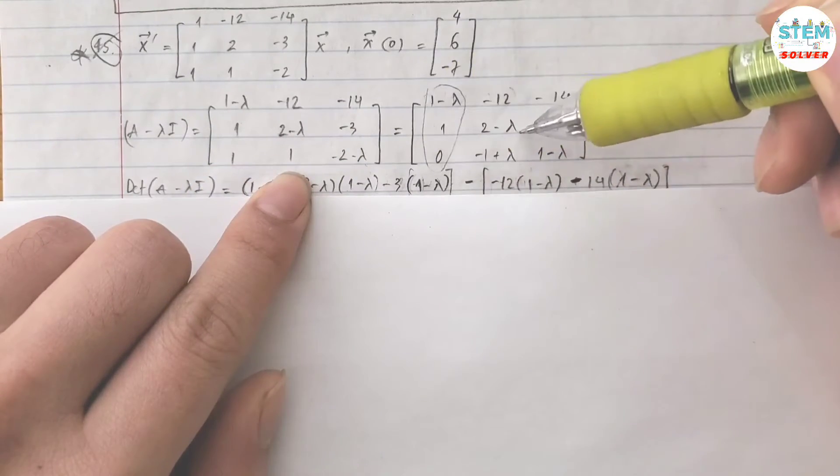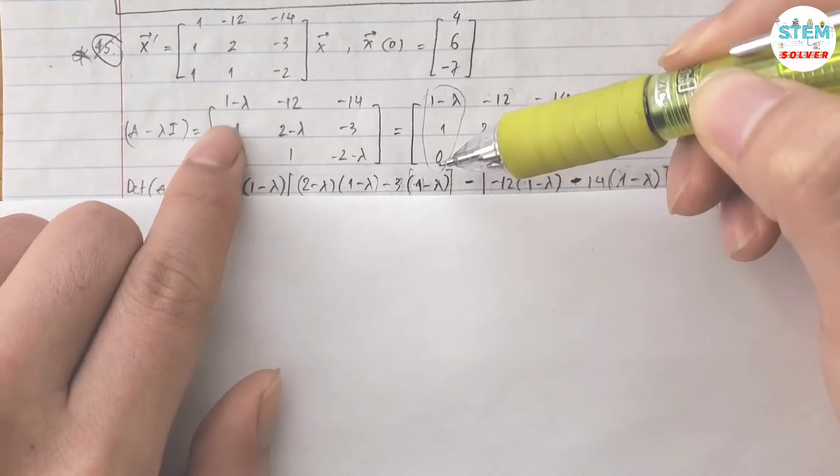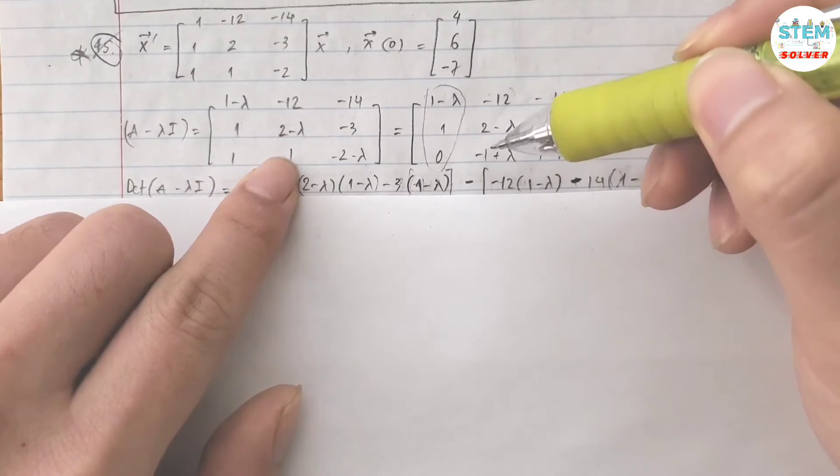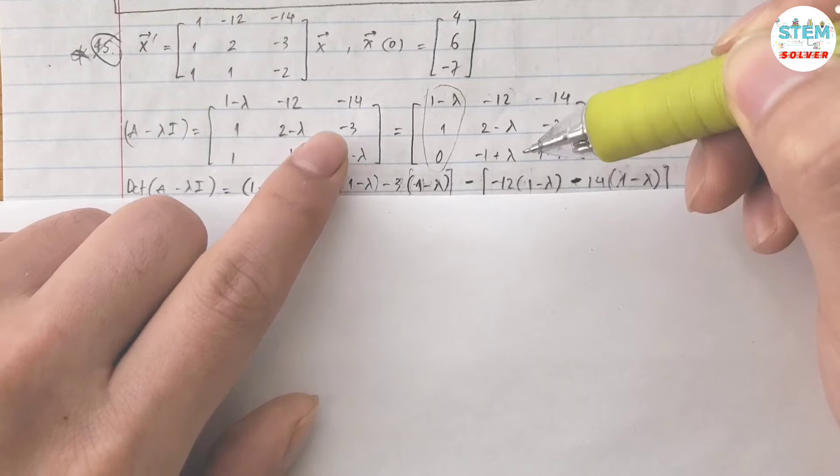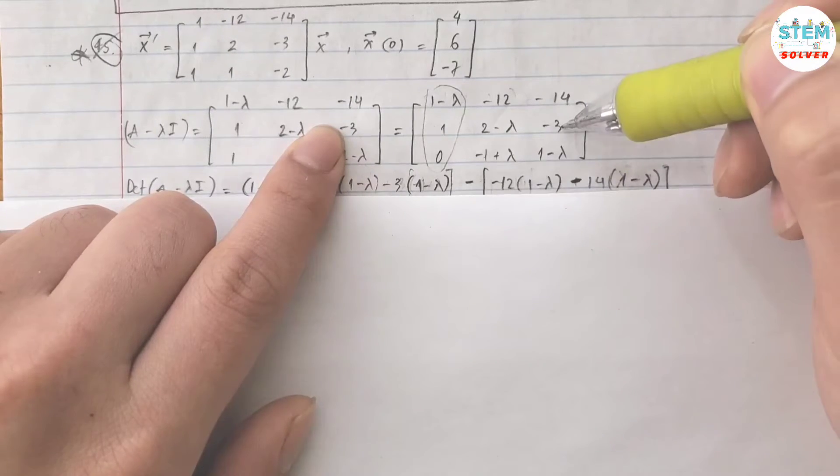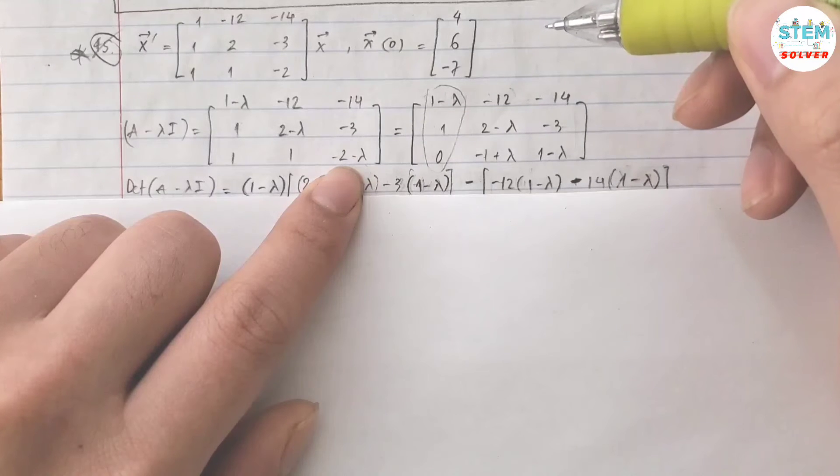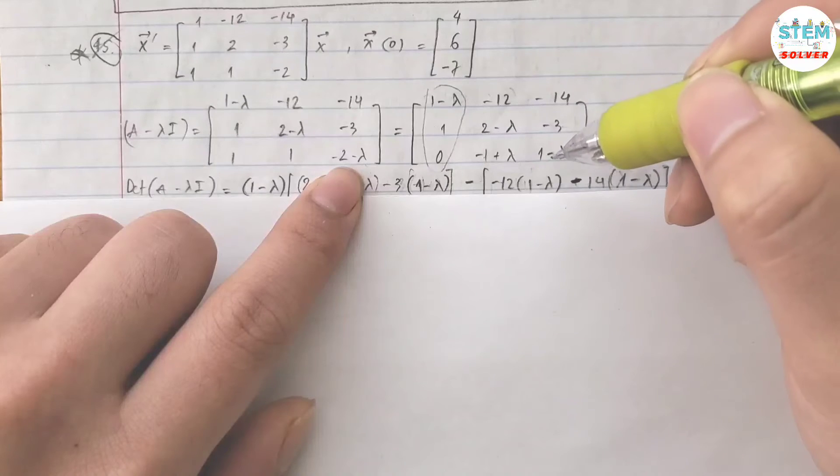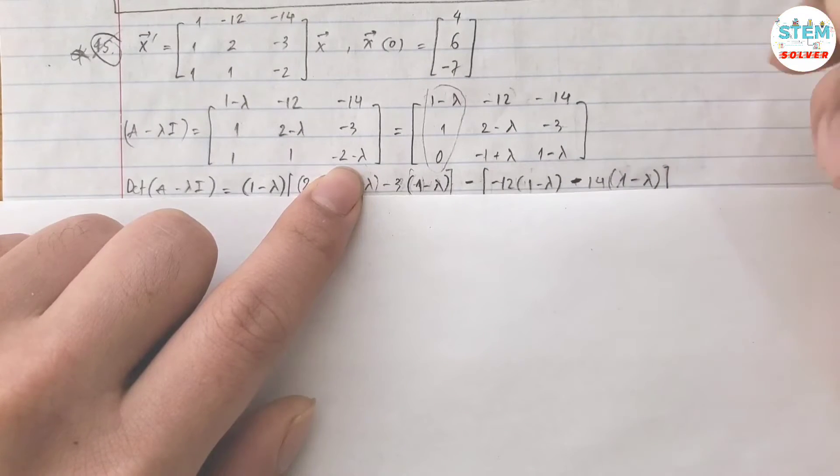So rewrite the first and second rows. Third row becomes negative one plus one, zero, negative two plus one, negative one, positive lambda, negative three, which is positive one minus lambda.